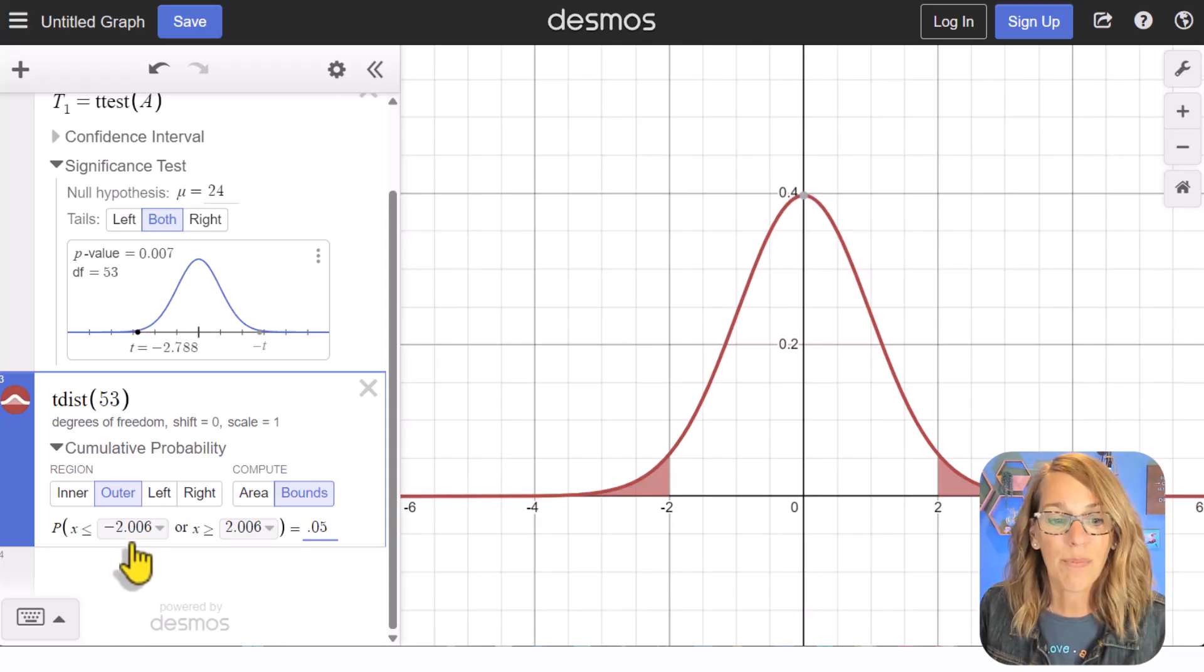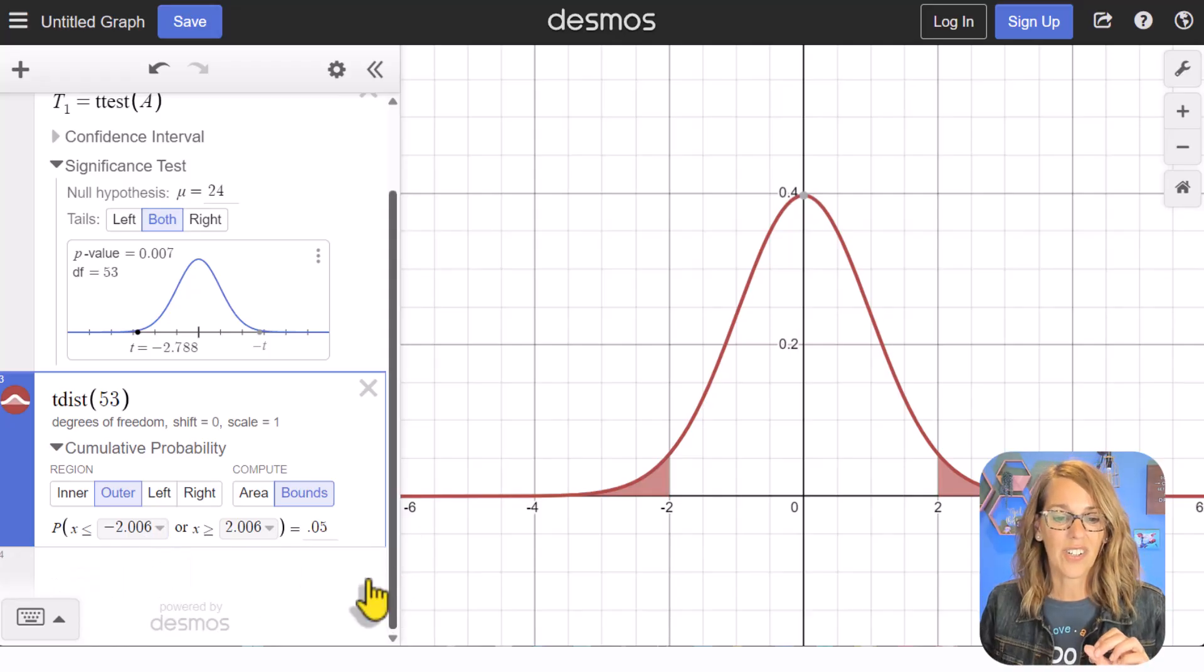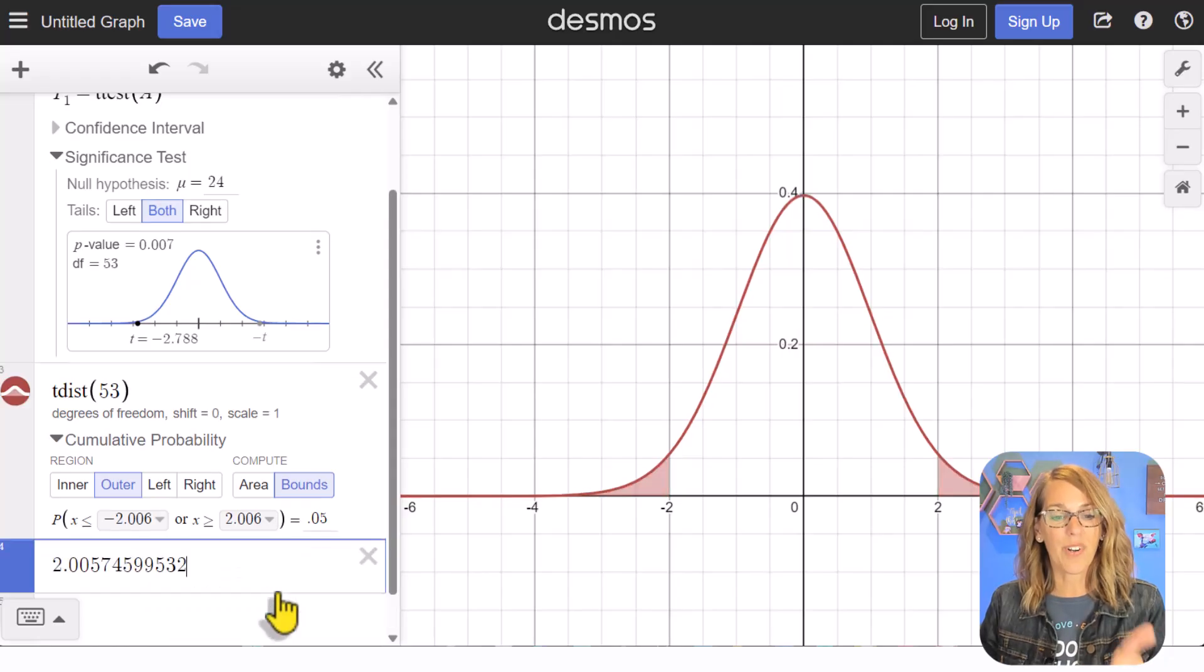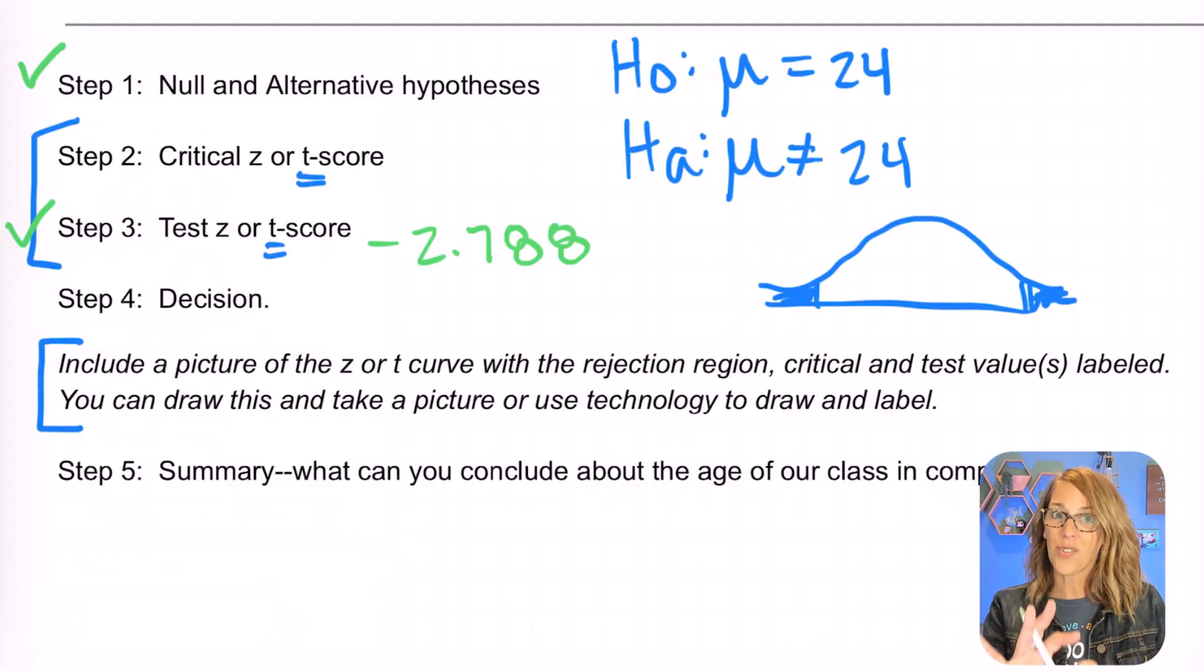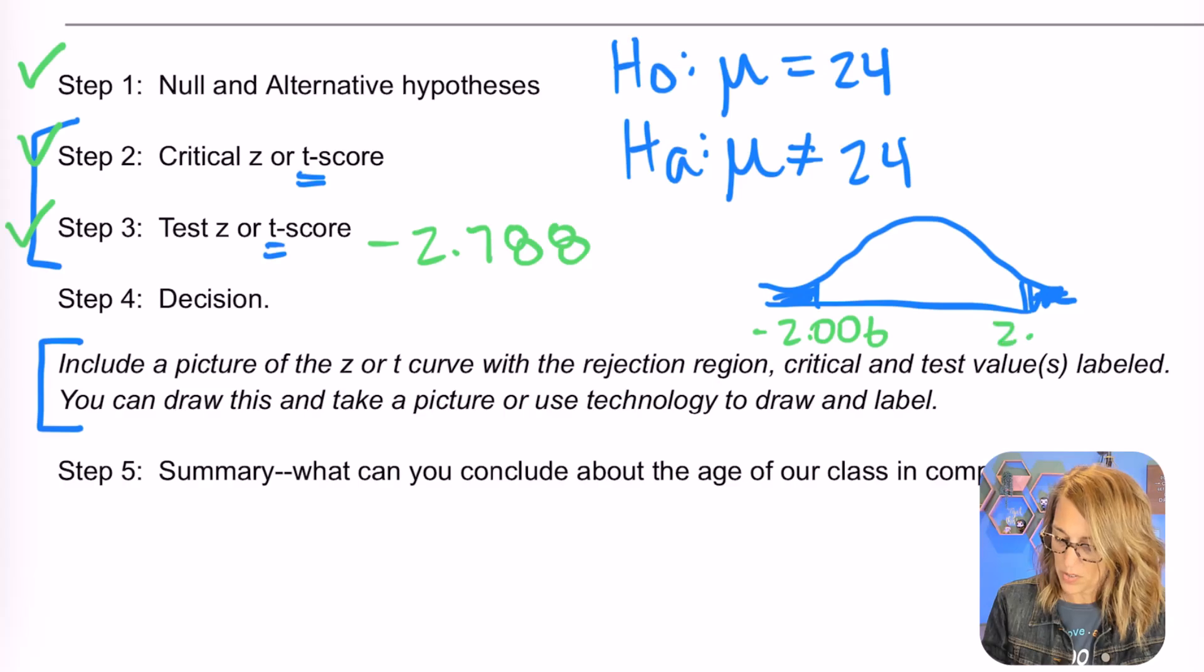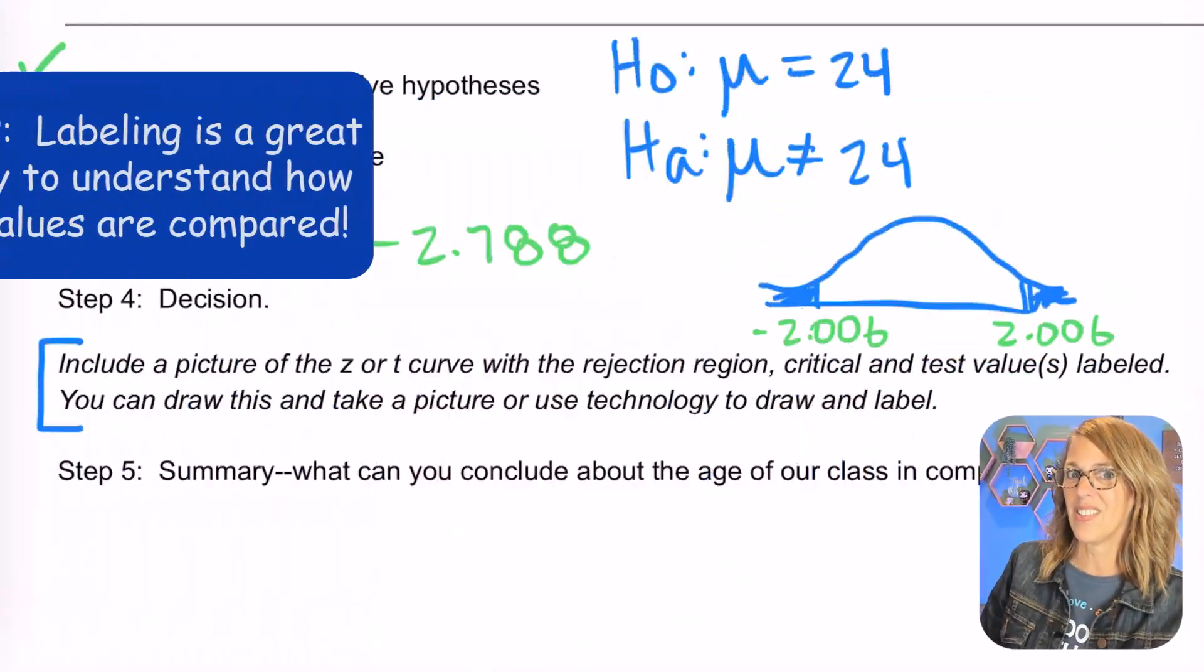If you needed more decimal places, click the down arrow. You've got your additional decimal places here. You can also export it into an empty cell. So we've got those critical t-scores. Let me go ahead and check this off and they're going to be plus or minus 2.006. These say that I need to be at least 2.006 standard deviations away from 24, that expected mean, in order to be significantly different.